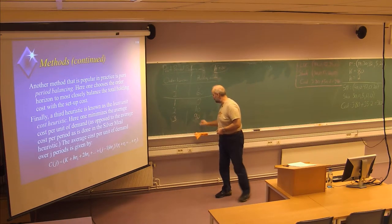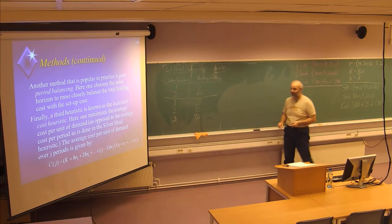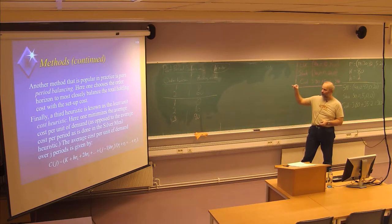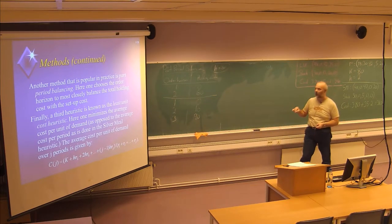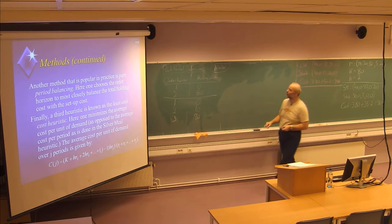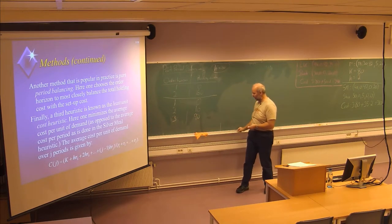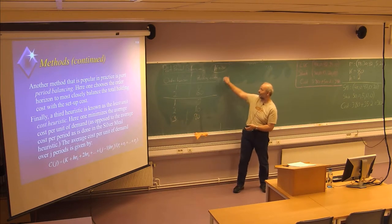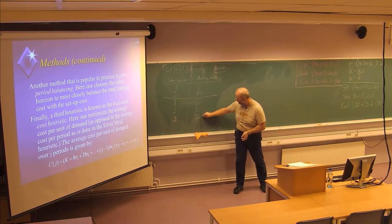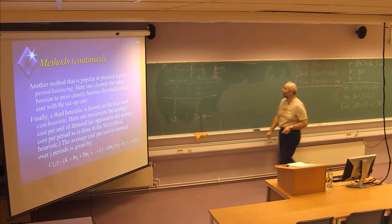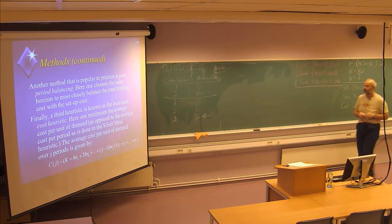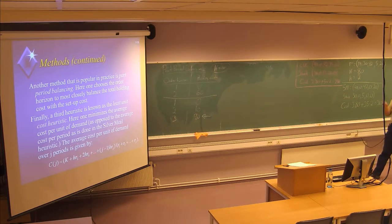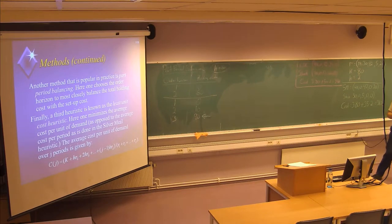The idea of part period balancing is to choose the holding cost which is closest to the setup cost. Here 90 is closer to 80 than 10. So that's why we are choosing this one. Which means in period number three, by looking at the part period balancing technique, we should produce 67 items, and then we have enough demand covered for the two coming periods.